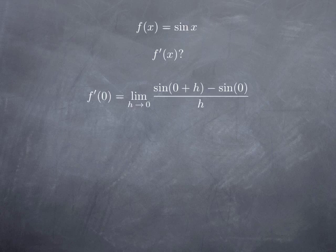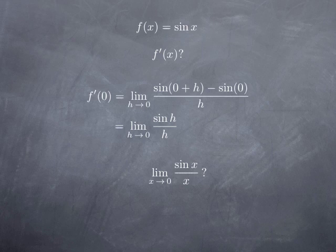then by definition the derivative at zero is the limit as h approaches zero of sin(0 + h) minus sin(0) over h. Since sin(0) is zero, this becomes the limit at zero of sin(h) over h, and therefore to obtain the derivative at zero we need to know the limit at zero of sin x over x.